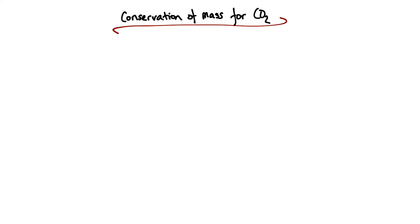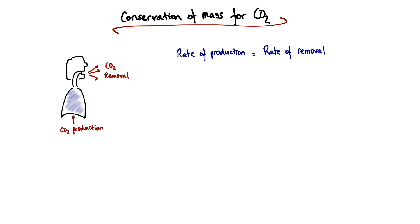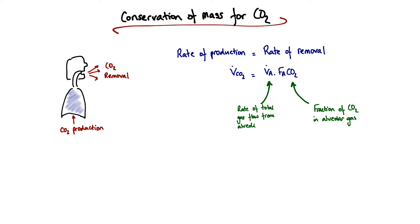Next we look at conservation of mass for CO2. We make the assumption that under steady state conditions, the rate of production of CO2 by the body is equal to the rate of CO2 removal. We can term that as V dot CO2 — which is defined as the rate of production — and it equals the alveolar ventilation multiplied by the fraction of CO2 within alveolar gas. So that's how much gas is shifting from the alveoli, multiplied by what proportion of that gas is CO2.